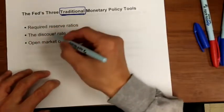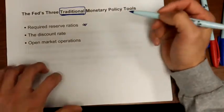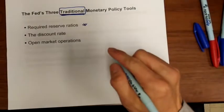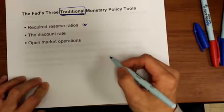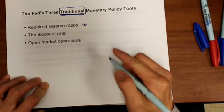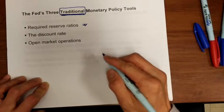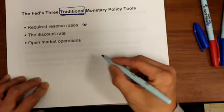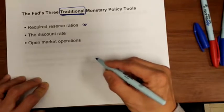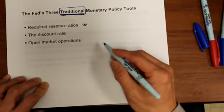Before we go to these three tools, let's understand what they are. First, required reserve ratio. If you deposit $100 into your bank, whose money is it? The answer is it's your money. Therefore, you have all the right to withdraw all your $100 from the bank anytime you want. Does that mean the bank has to keep all your $100 cash in their vault just in case you come to withdraw? The answer is no.